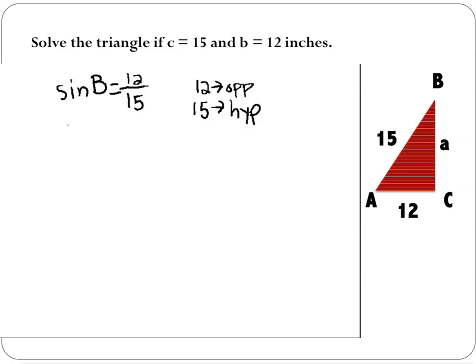When we solve for B, all we do is take the inverse sine of each side. So we type in our calculator, sine to the negative first, or inverse sine, of 12 divided by 15. When you type that in, you end up getting that B is 53.130 degrees.